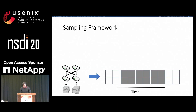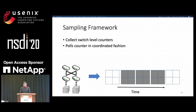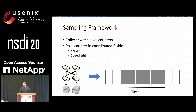The sampling framework collects switch-level counters. We poll counters in a coordinated fashion. SNMP and Speedlite are two ways to sample; in our testbed we use Speedlite. One advantage of Speedlite is you can separate traffic for individual applications or a set of applications, which allows us to optimize traffic for each application separately.